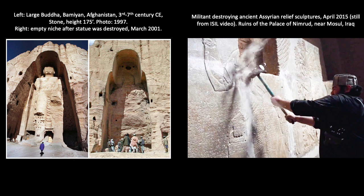Similarly, in 2015, the terrorist group ISIL or ISIS recorded themselves toppling and destroying ancient Assyrian relief sculptures made for King Ashurnasirpal II in Nimrud, in present-day northern Iraq. The group claimed this iconoclasm was to prevent the false worship of idols. However, many people argued that these objects no longer held spiritual significance but are instead treasures of cultural heritage. The fact that in both instances the destruction was announced and carried out publicly implies the actions had more to do with conveying a sense of power and instilling fear and devastation in others.